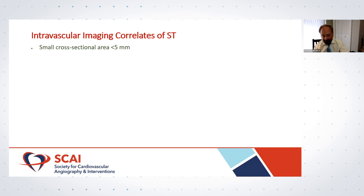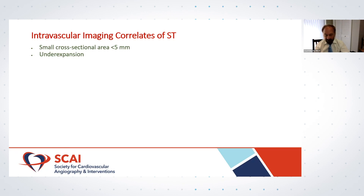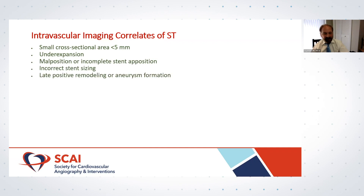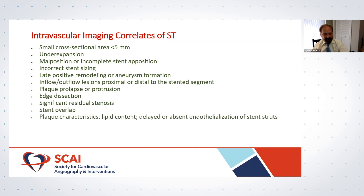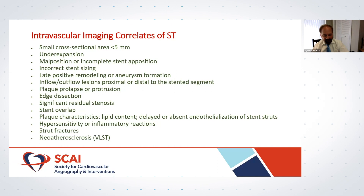Transitioning now to stent thrombosis, premature termination of the DAPT regimen remains the most common cause. Additionally, faults in stent implantation technique may be causative. SCAI recommends strongly considering imaging guidance at the initial stent implantation, assuring that these mechanistic components have been addressed: small cross-sectional area, under-expansion, malapposition, incorrect stent sizing, late positive remodeling, inflow or outflow lesions, plaque prolapse or protrusion, edge dissections, significant residual stenosis, stent overlap, plaque characteristics of a certain kind, hypersensitivity, strut fractures, and neoatherosclerosis.